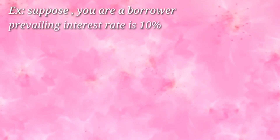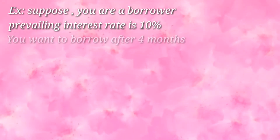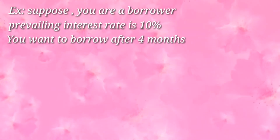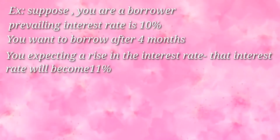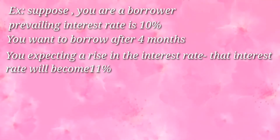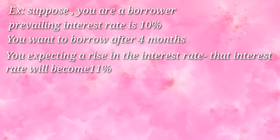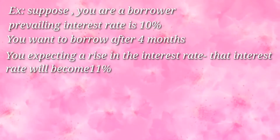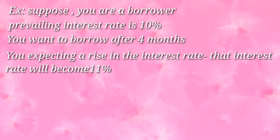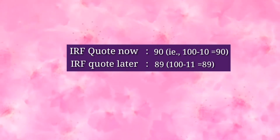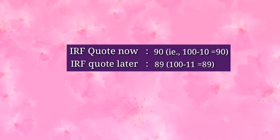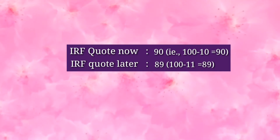Let me explain with an example. Suppose you are a borrower and the prevailing interest rate is 10%. You want to borrow after four months — not now, but after four months. You expect a rise in the interest rate to 11% after four months. The IRF quote now is 90 (100 minus 10). After four months, the IRF quote would be 89 (100 minus 11).